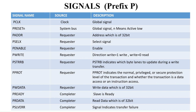PENABLE is asserted by the master and indicates the second and subsequent cycles of an APB transfer. In the second operating state, PENABLE will be asserted — that is why it is called the second and subsequent transfer indicator. PWRITE is used to indicate the direction of the operation: if PWRITE is high, a write operation is taking place; if PWRITE is low or de-asserted, it is a read operation. PWRITE is asserted by the master.